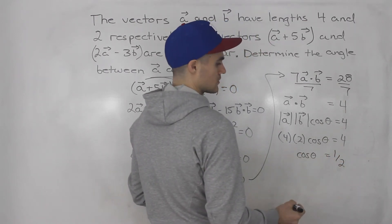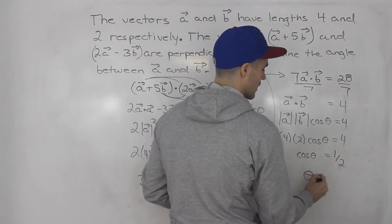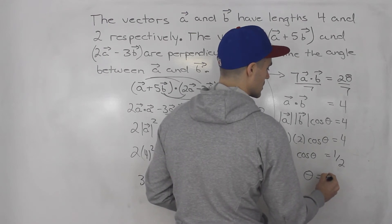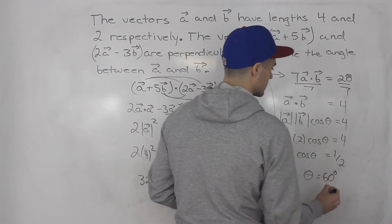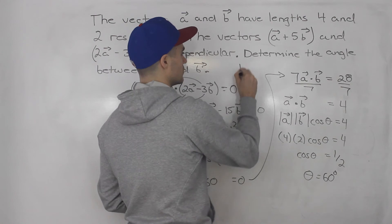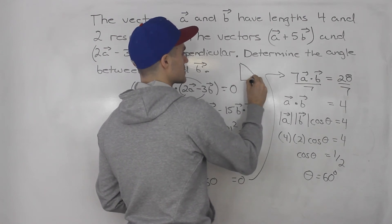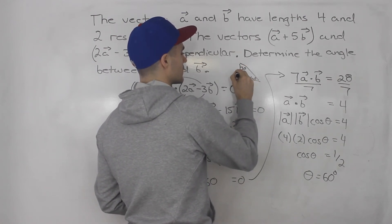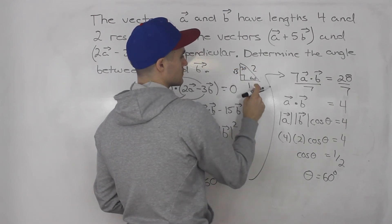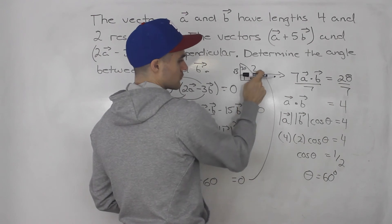And when does cos θ equal 1/2? Well when θ is equal to 60 degrees. Right? That's a special triangle. So 60, 30. We got root 3, 1 and 2.